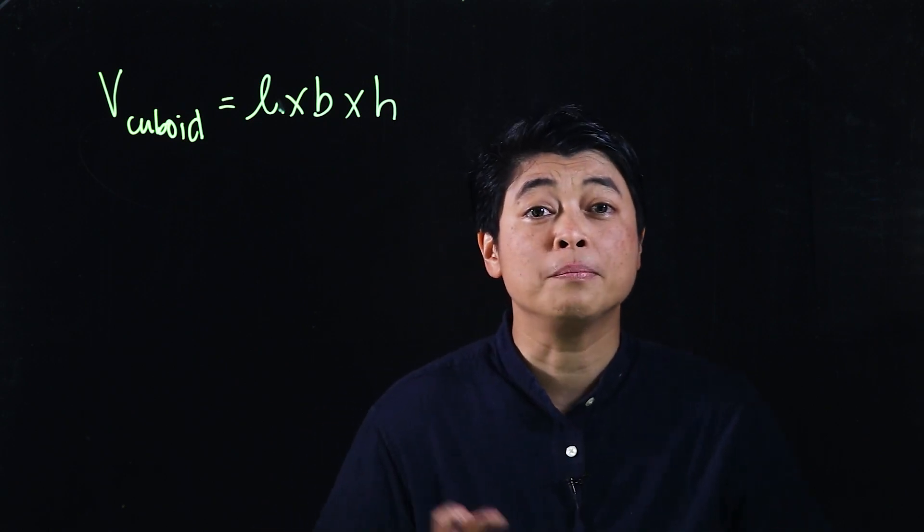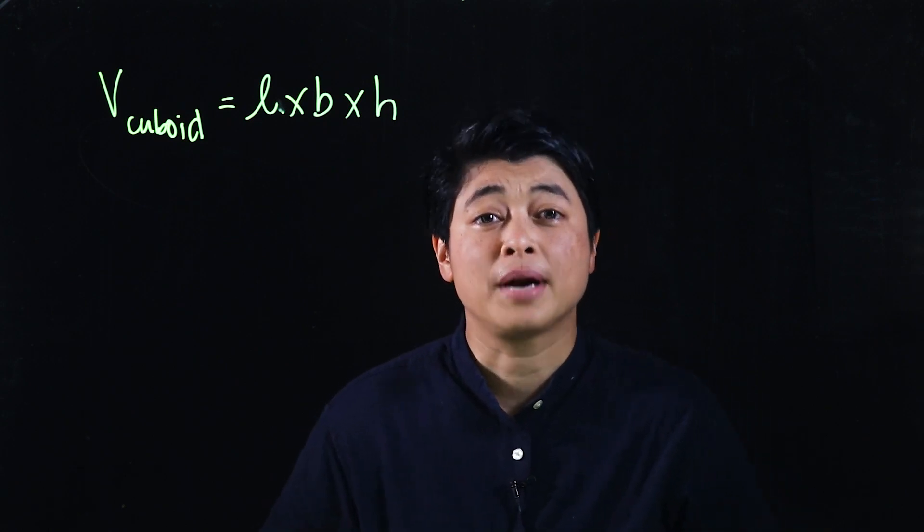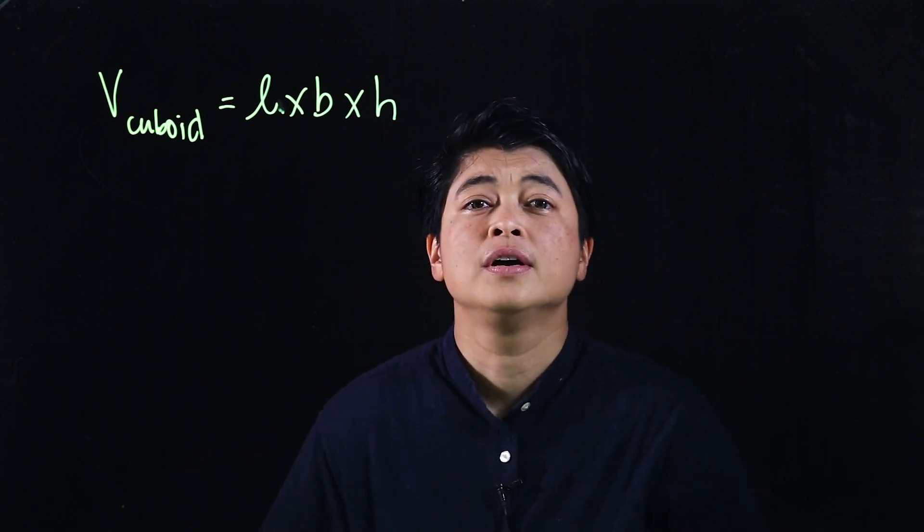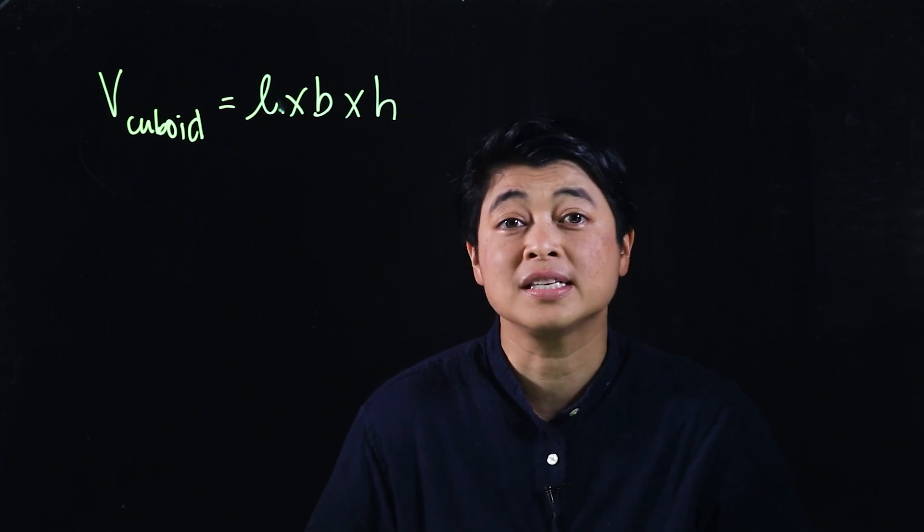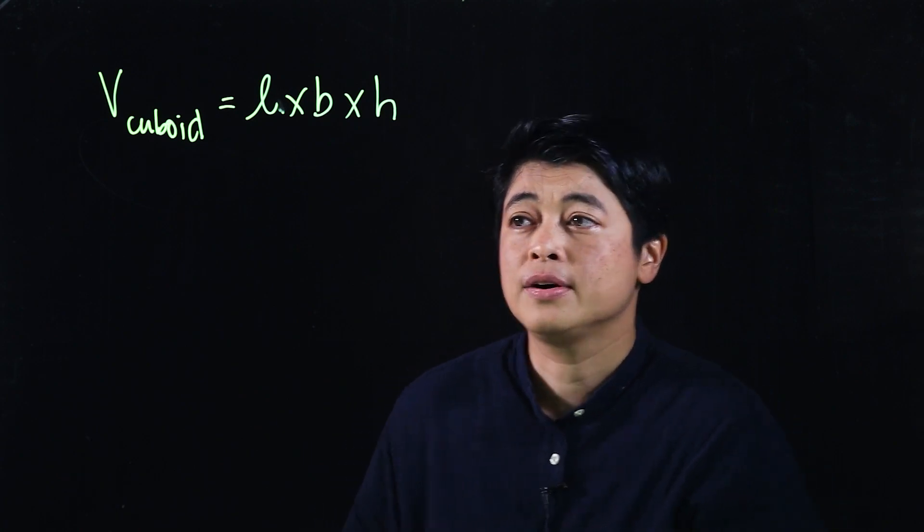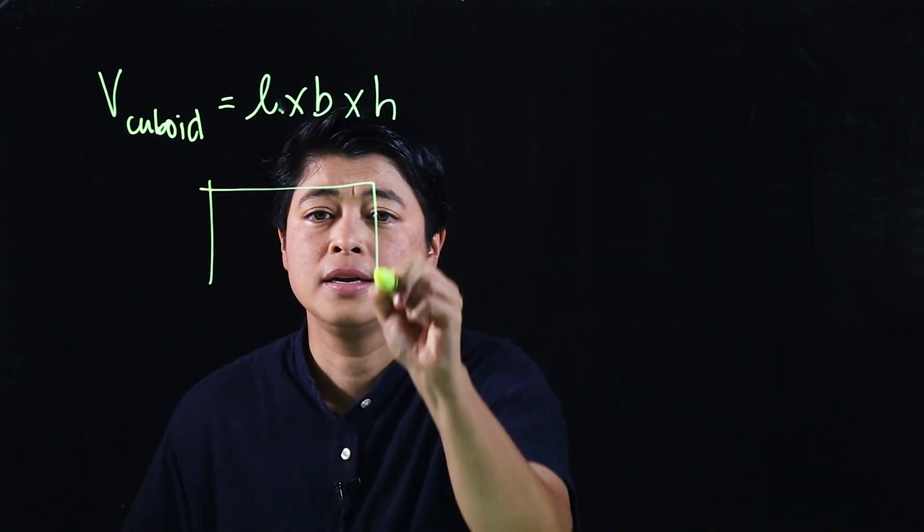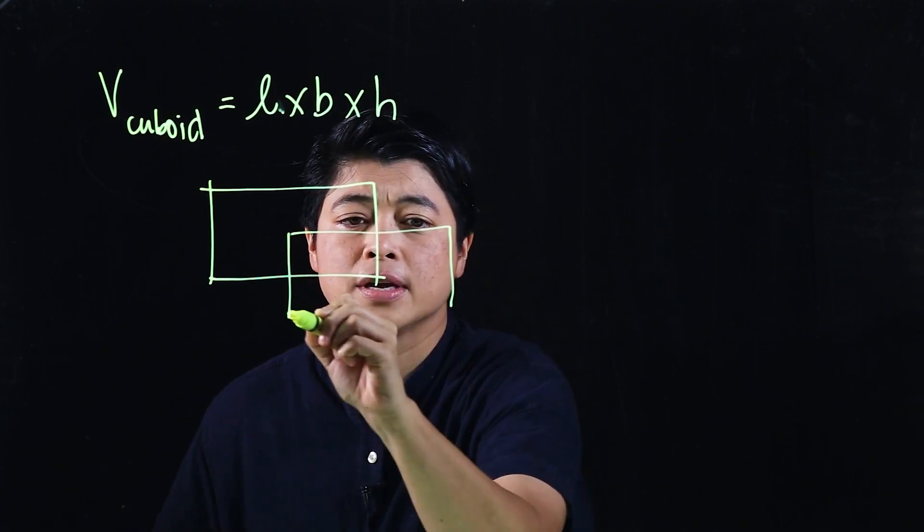But if we follow the book, it's called breadth. So to remove the confusion, we will just follow breadth because the book doesn't ever mention width. In a drawing, this will be your 3D drawing.